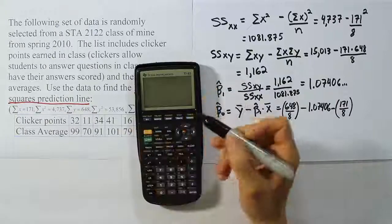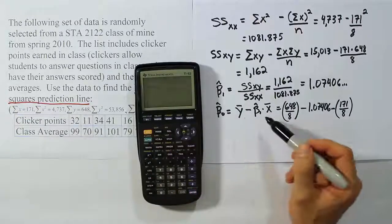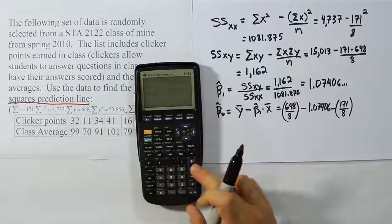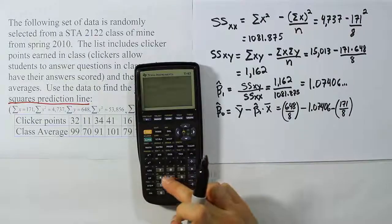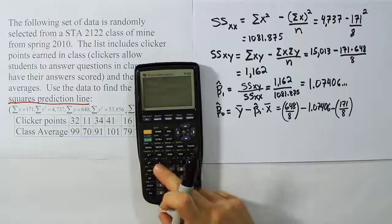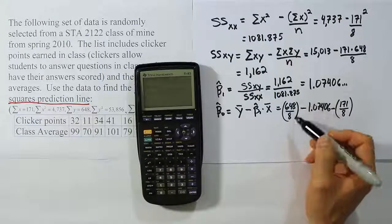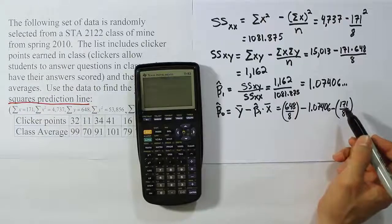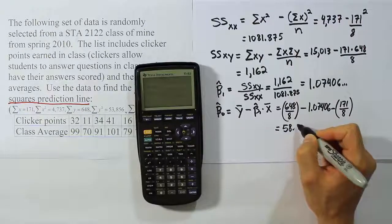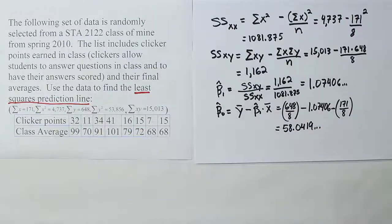Now I happen to have my slope still in my calculator. What I'm going to do is store that as X, a variable, and I can use that to finish this calculation. I'll have 648 divided by 8 minus the slope that I had, which is 1.07406 and so on, times 171 divided by 8. I don't need any special parentheses. I can just put this in exactly as I see it. 648 divided by 8 minus the slope times 171 divided by 8. That works perfectly fine as is. The answer works out to be 58.0419 and so forth.